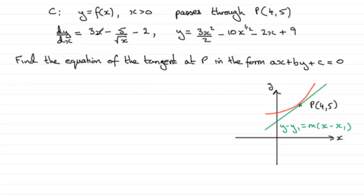And we've got the gradient of the curve at any general point given by dy by dx. So that's our starting point. What we need to do is just substitute when X is 4 into dy by dx, and that will give us the gradient of the tangent at this point.